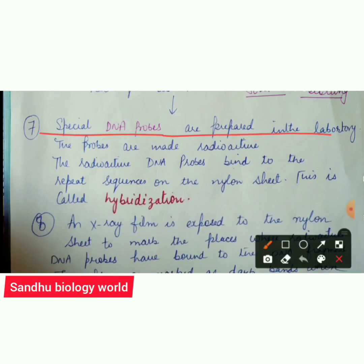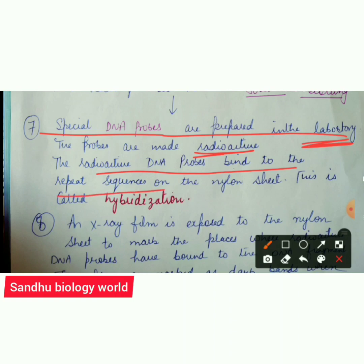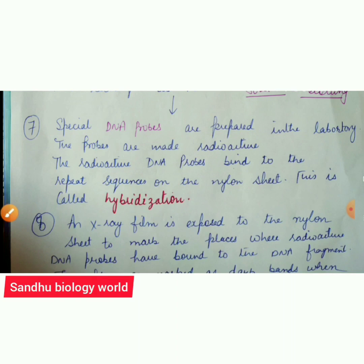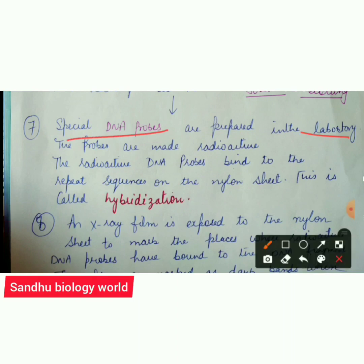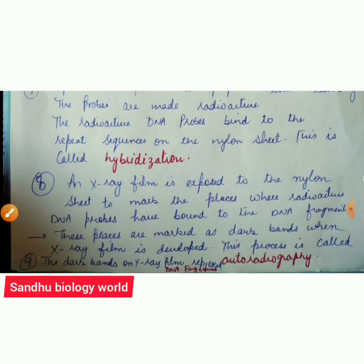Special radioactive DNA probes are prepared in the laboratory. These radioactive DNA probes are then bound to repeat sequences on the nylon sheet. When these probes are bound onto the nylon sheet, this process is called hybridization.